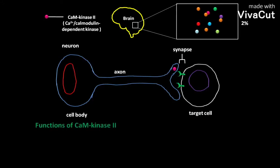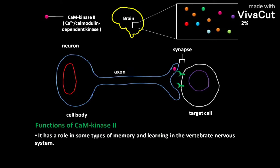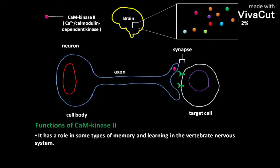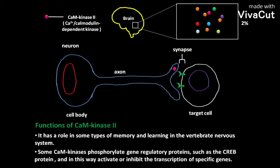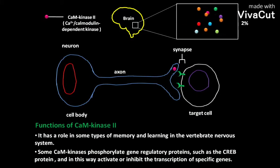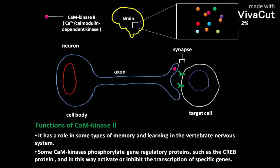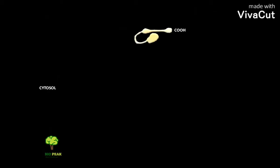Functions of CAM kinase 2: it has a role in some types of memory and learning in the vertebrate nervous system. Some CAM kinases phosphorylate gene regulatory proteins such as the CREB protein, and in this way activate or inhibit the transcription of specific genes. CAM kinase 2 has a carboxy terminal and an amino terminal, and is a serine-threonine kinase.